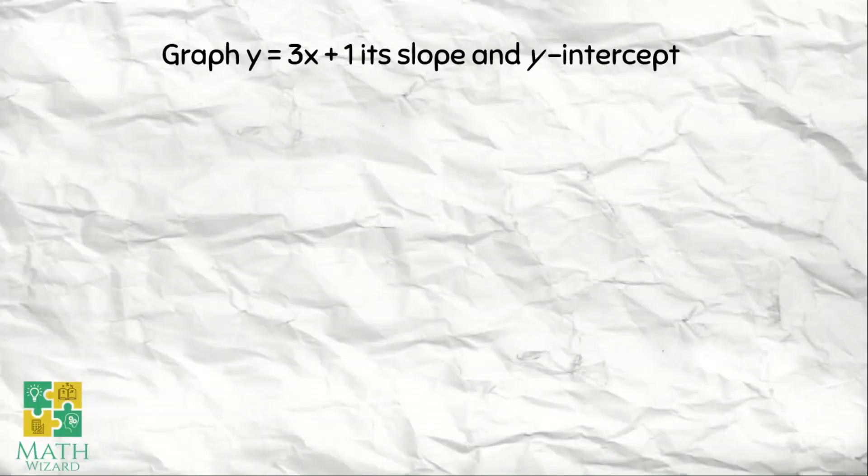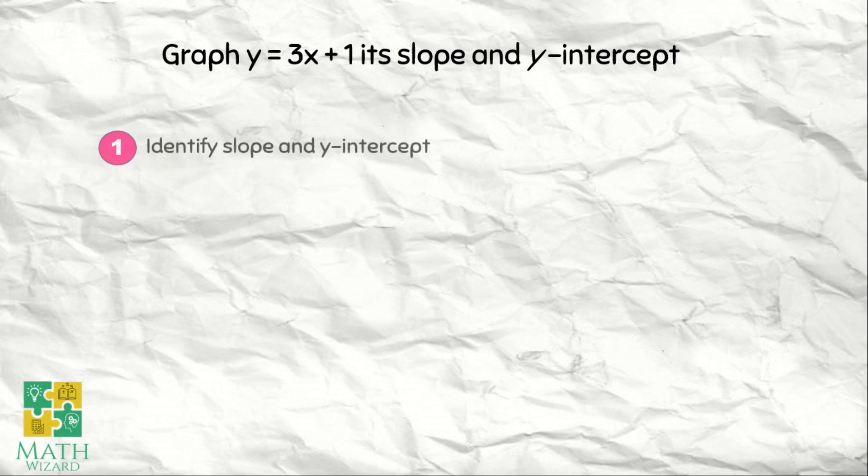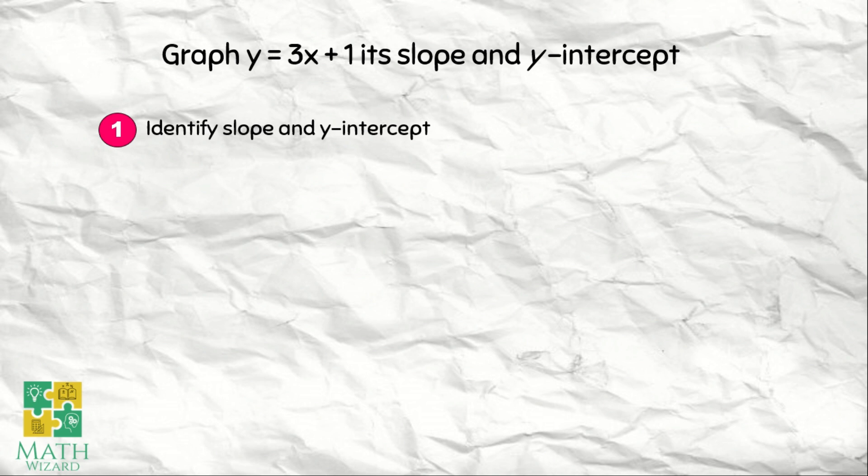Graph y is equal to 3x plus 1, its slope and y-intercept. So yung first step is we need to identify the slope and the y-intercept. Yung slope natin ay positive 3 and the y-intercept is positive 1. So yung point natin is 0 and 1.